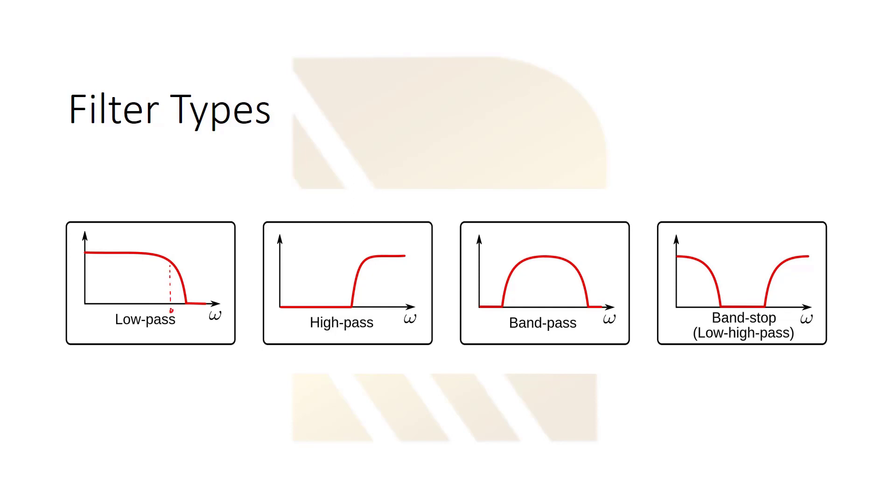We call it a corner frequency. Let's say this is omega one. It means that if we have a signal which has a frequency lower than this value, it will pass through the filter, but higher frequencies will be attenuated by the filter. So basically we are rejecting them.